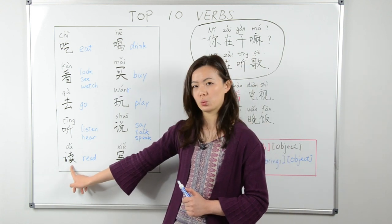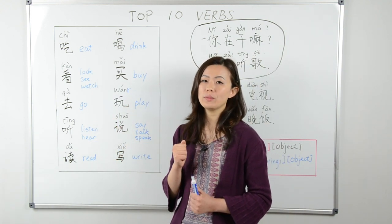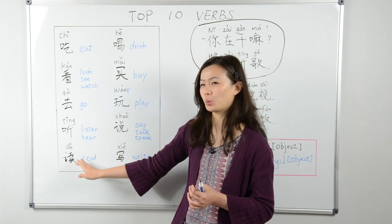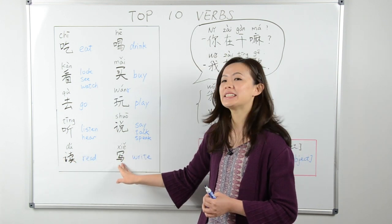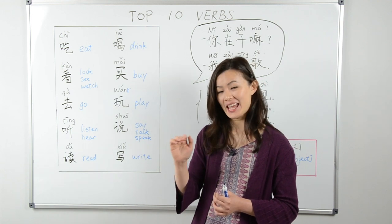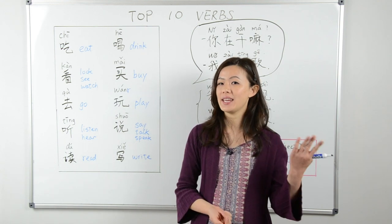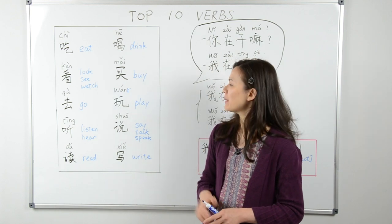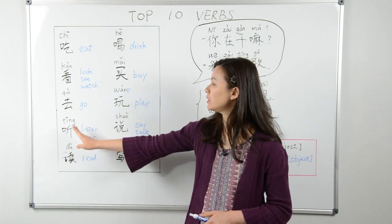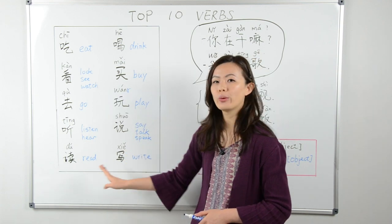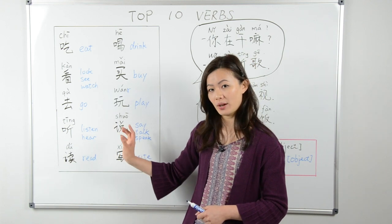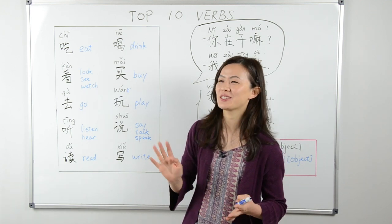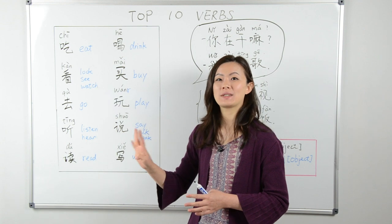Next is 读. 读 means read — either read out loud or read silently. And after 读 is 写, which means write. You can say 写信 — to write a letter — or 写邮件 — to write an email. Actually, the last four verbs 听, 说, 读, 写 are often used as a set phrase describing the four important aspects of language learning: listening, speaking, reading, and writing.